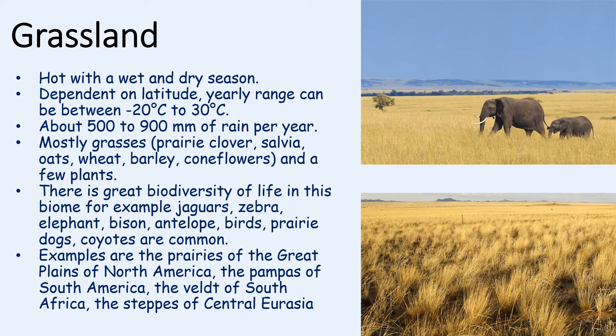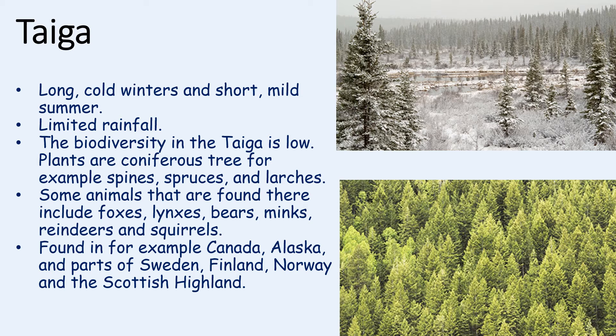The climate of the taiga is long cold winters and short mild summers with limited rainfall, and the biodiversity in the taiga is low. Plants are usually coniferous trees — for example pines, spruces and larches — and these plants keep their needles all year round so they can make the most of the sunlight. Animals found in the taiga include foxes, lynx, bears, minks, reindeer and squirrels. The taigas are located in Canada, Alaska, parts of Sweden, Finland, Norway and the Scottish Highlands.